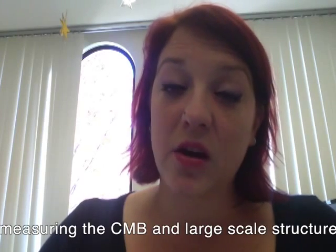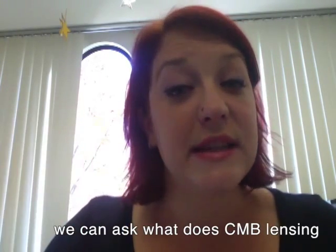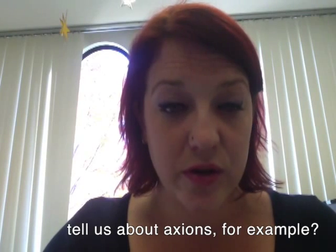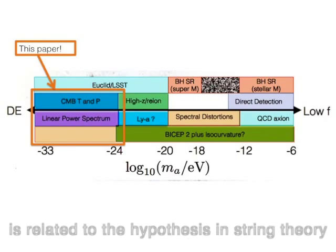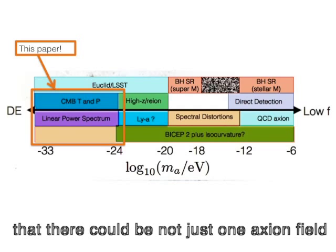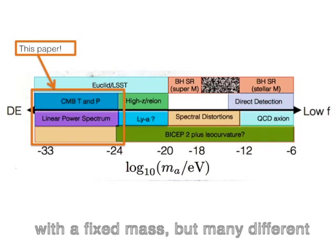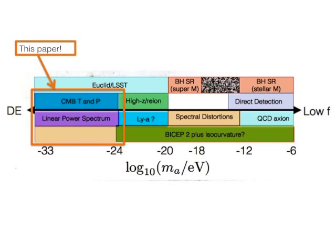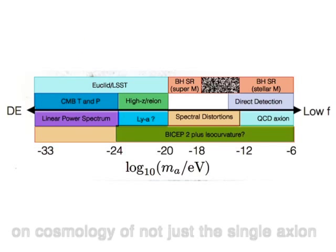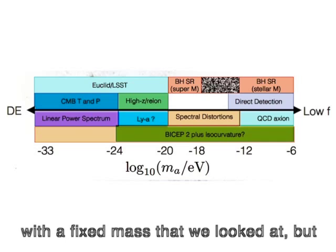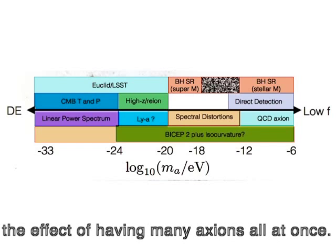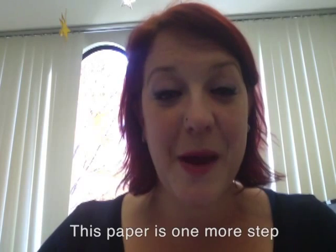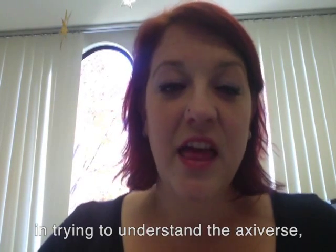There are many ways forward. We can add new data sets to the mix and continue to probe this space. We can also look at new cosmological observables — rather than just measuring the CMB and large scale structure, we can ask what CMB lensing tells us about axions, for example. One other way forward is related to the hypothesis in string theory that there could be not just one axion field with a fixed mass, but many different axion fields with all different masses — the scenario known as the string axiverse. We could compute the effects on cosmology of having many axions all at once. This paper is one more step in trying to understand the axiverse and its predictions for cosmology.